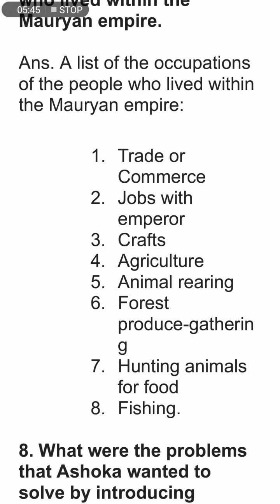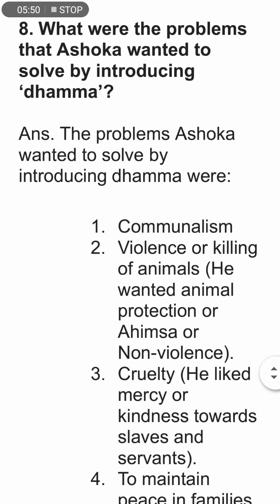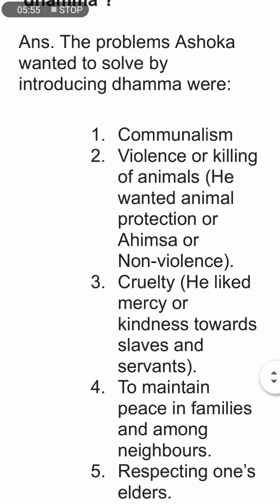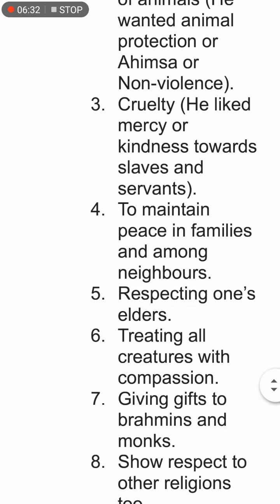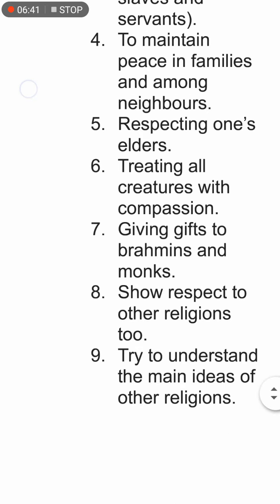What were the problems that Ashoka wanted to solve by introducing Dhamma? The problems included communalism, violence or killing of animals, and the sacrifice of animals. He promoted ahimsa or non-violence, mercy and kindness towards slaves and servants, and maintaining peace in families and among neighbors. He also called for respecting one's elders, treating all creatures with compassion, giving gifts to Brahmans and monks, showing respect to other religions, and trying to understand the main ideas of other religions.